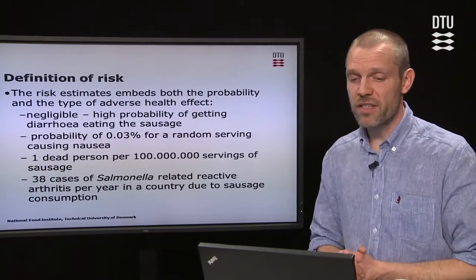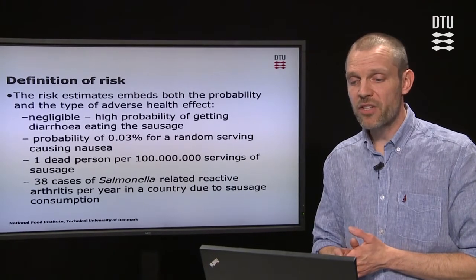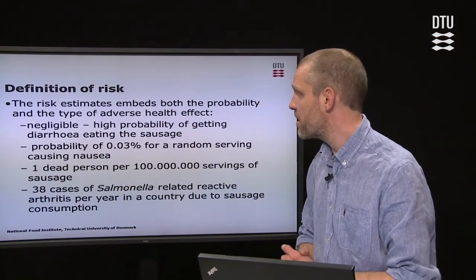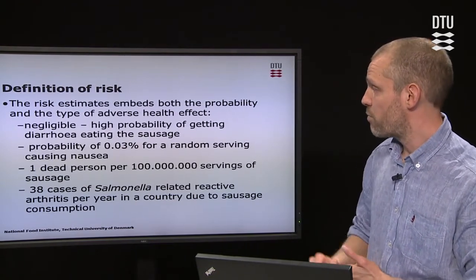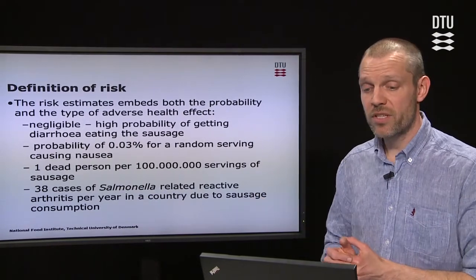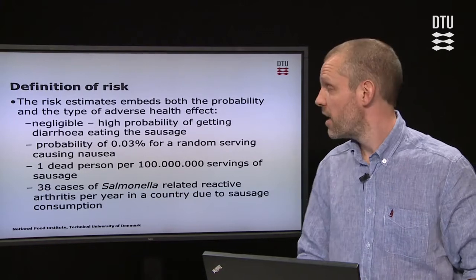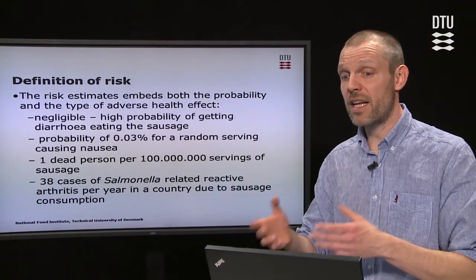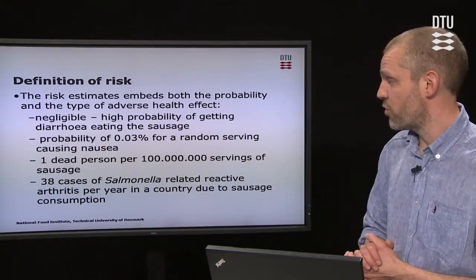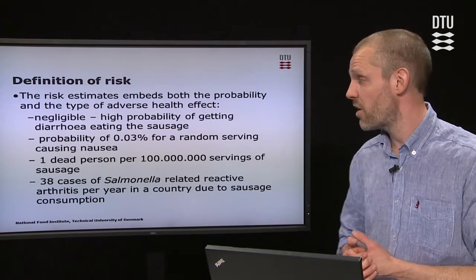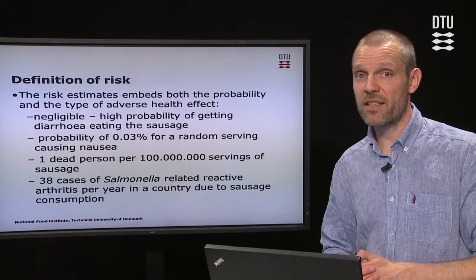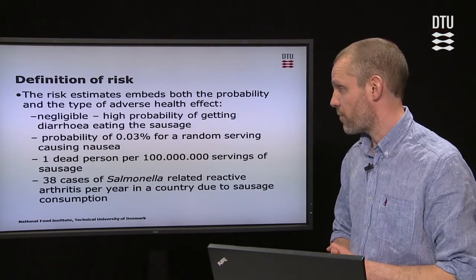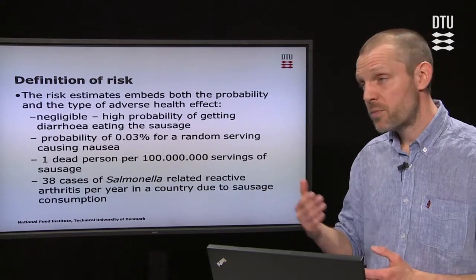With a more strict definition, risk embeds both the probability and the type of adverse health effect. For example: a negligible or high probability of getting diarrhea eating the sausage; a probability of 0.03% for a random serving causing nausea; one dead person per 100 million servings of sausages; or 38 cases of Salmonella-related reactive arthritis per year in a country due to sausage consumption. In all these cases, we have the likelihood and the specification of the adverse effect.